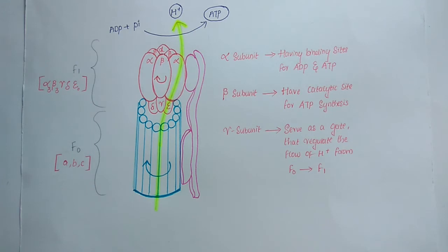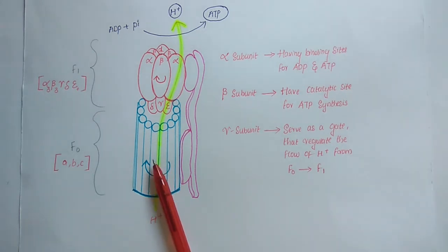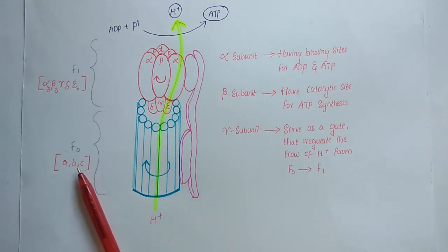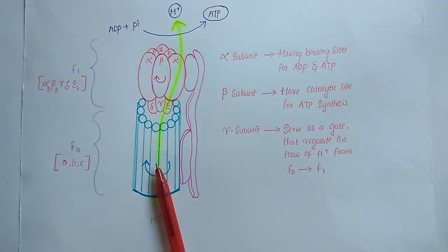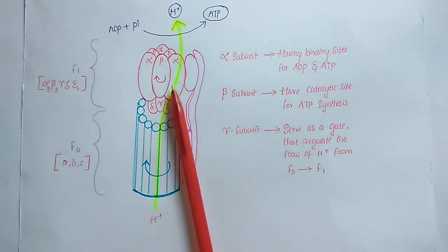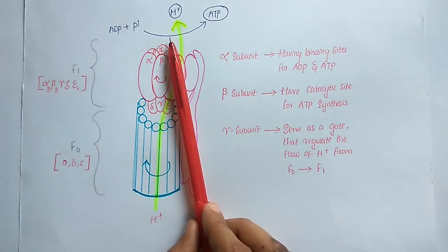The alpha subunit has the binding site for ADP and ATP, and the beta subunit has the catalytic site for ATP synthesis. The gamma subunit has a channel that serves as a gate, regulating the flow of protons from F0 to F1. F0 is an integral membrane protein composed of at least 3 different subunits — A, B, and C — and it forms a channel through which protons can cross the inner membrane and reach the mitochondrial matrix.